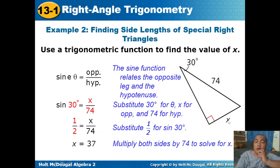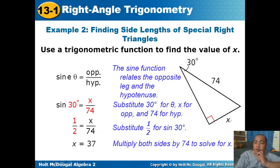As a shortcut, since it's a special right triangle, the shorter leg is simply half the hypotenuse: 74 divided by 2 equals 37. For the next example, using a trigonometric function to find x in an isosceles right triangle with hypotenuse 20. The legs are equal, so we divide 20 by square root of 2, then rationalize: 20 times square root of 2 over 2 equals 10 square root of 2. Using sine 45 degrees: sine 45 equals x over 20, so x equals 10 square root of 2.